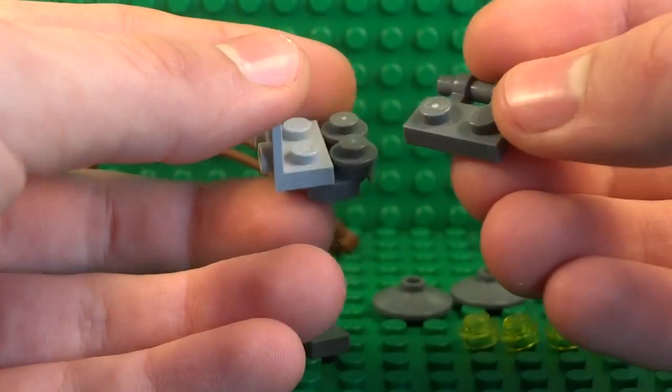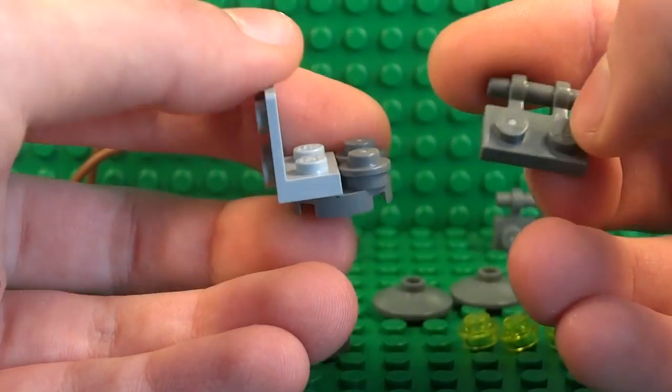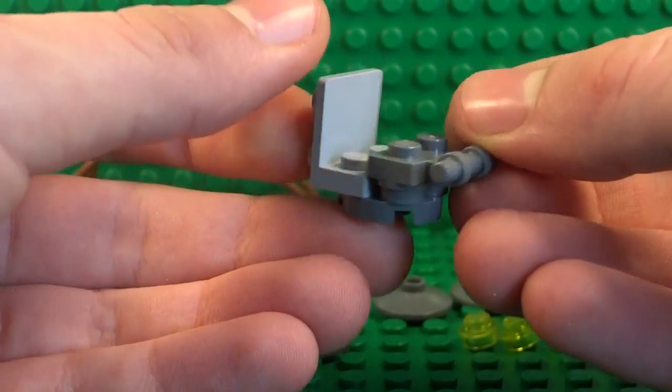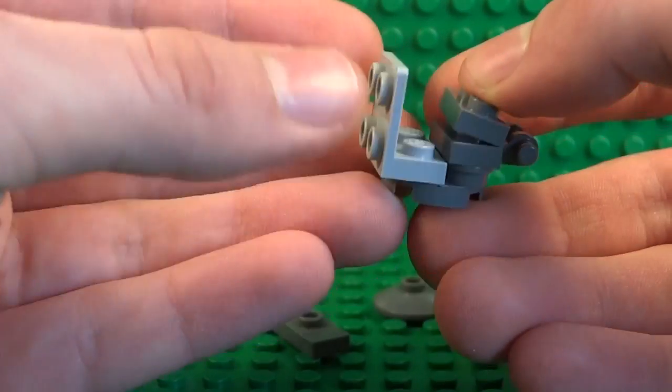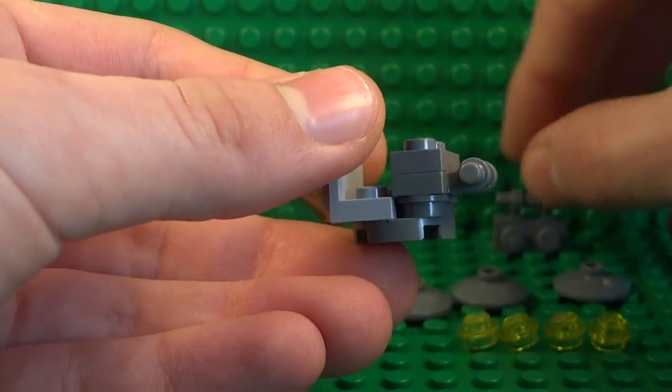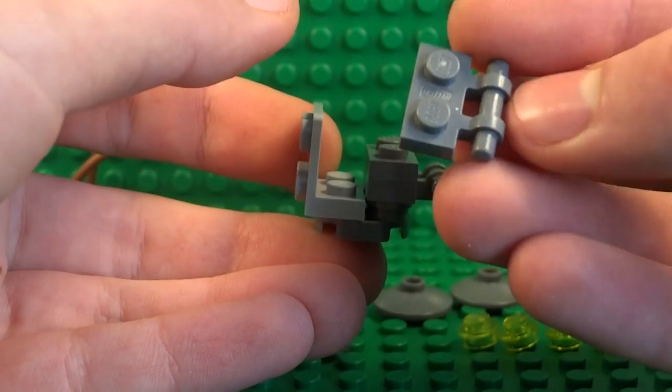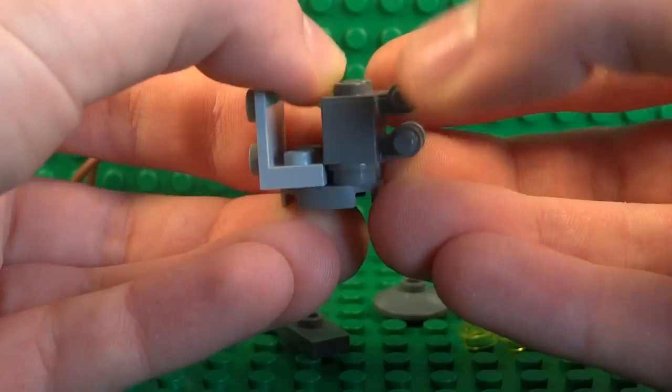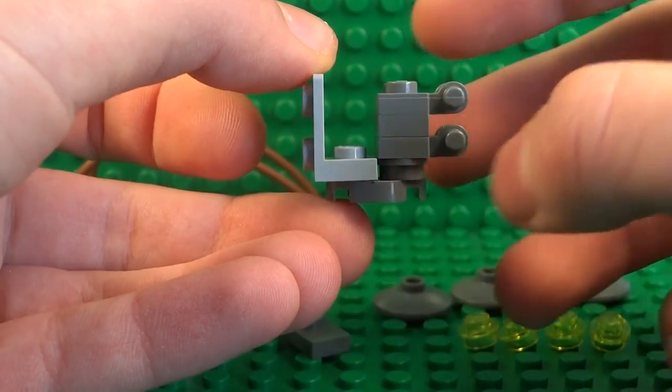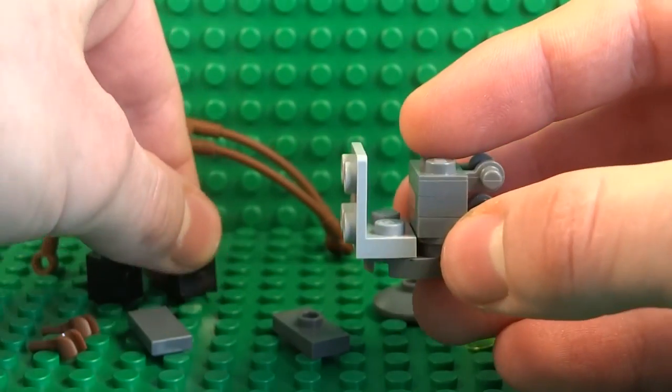Next we can take a 1x2 plate with this bar piece, put that on top, and then separate that by another plate just in the middle just to give it some height, and place your second 1x2 plate with the bar piece on the end just next to it like that.